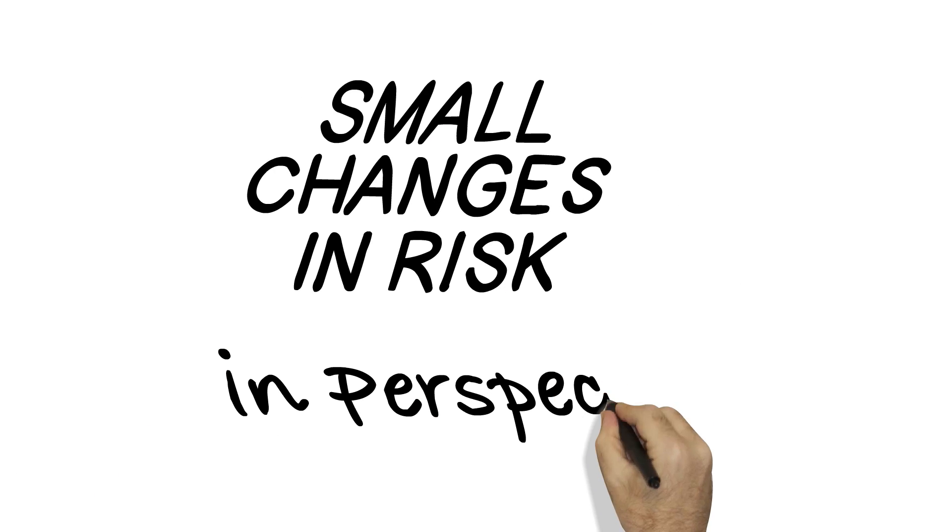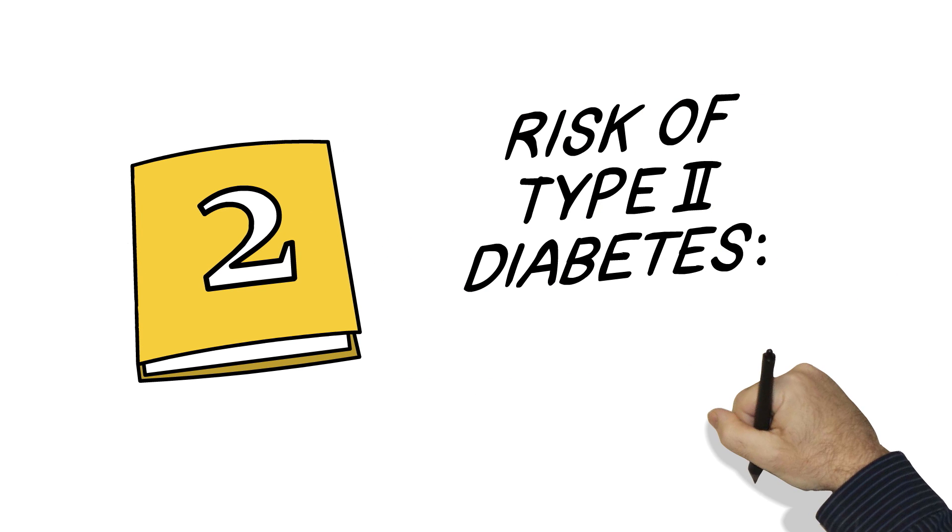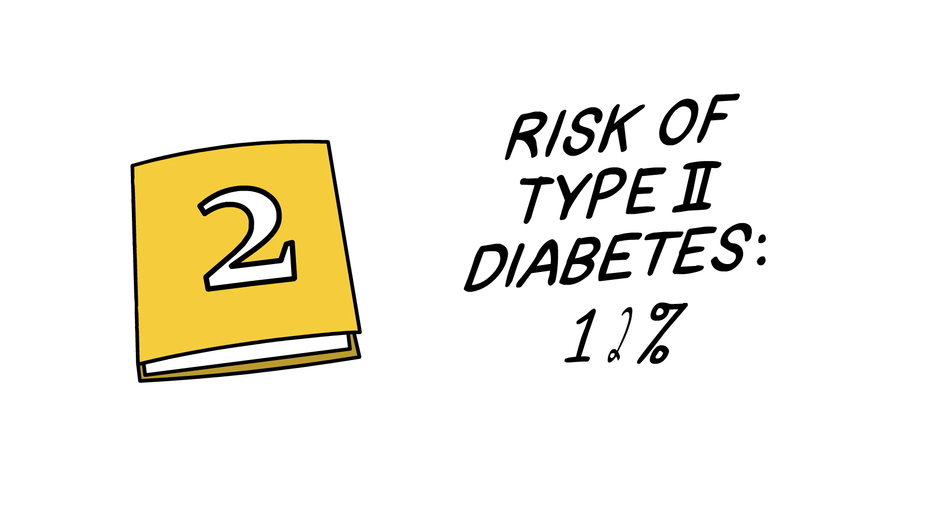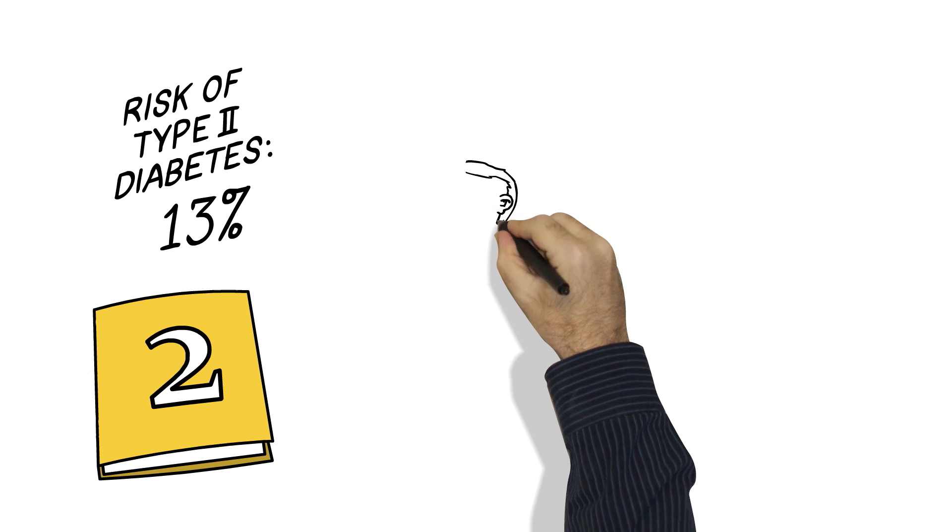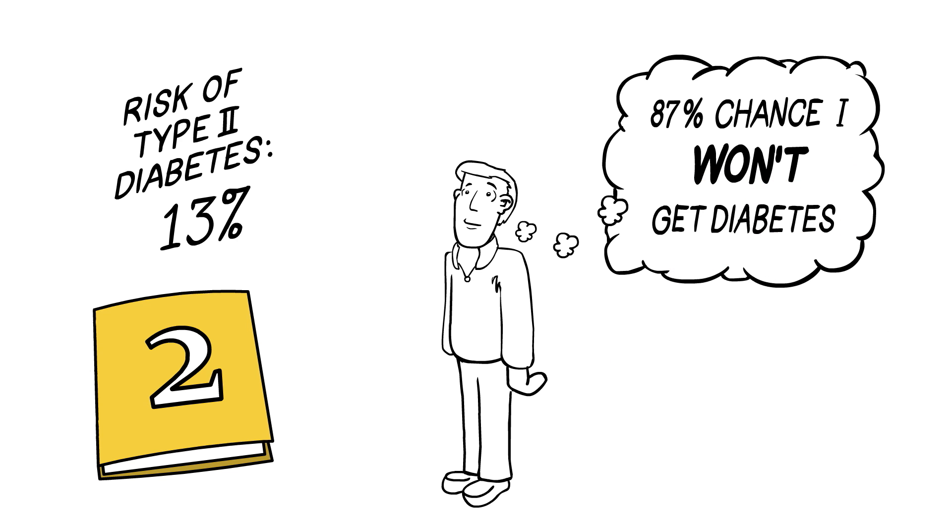Small changes in risk can be hard to put in perspective. Let's say genomic sequencing shows your risk of type 2 diabetes goes from 10 to 13 percent. How do you frame that? Do you say to yourself there's an 87 percent chance I won't get diabetes, or a 13 percent chance I will?